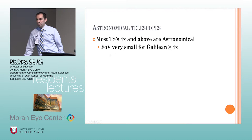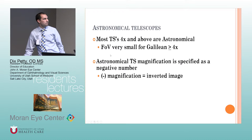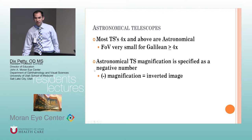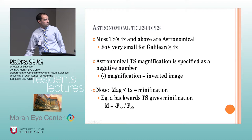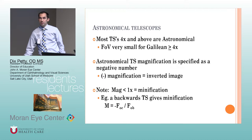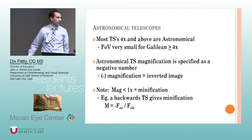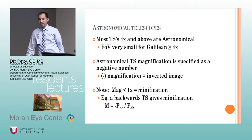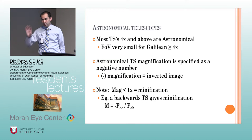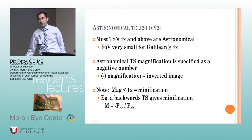Astronomical telescopes are generally greater than 4x. Anything less than 4x is probably Galilean; anything greater is probably astronomical, due to field-of-view limitations. The magnification for astronomical telescopes is given as a negative number because the image is inverted. Don't confuse magnification less than 1 with astronomical — that just means minification or a reversed telescope. It's specifically a negative number that indicates astronomical.